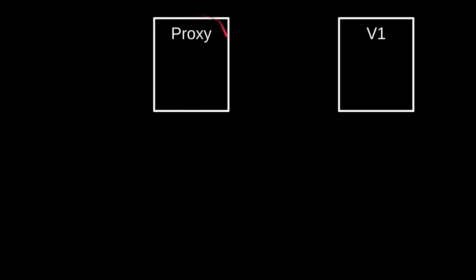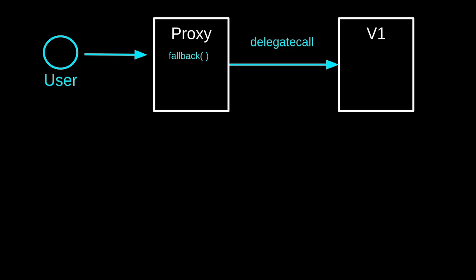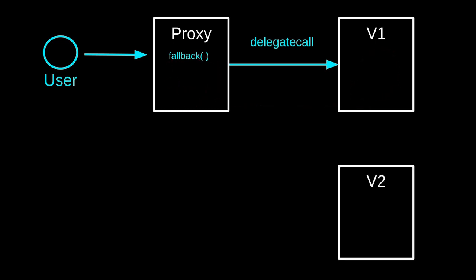Here I have what's called a proxy contract. This is a contract that the users will call. And on the right, we have a contract called implementation — these are the contracts that can be upgraded. A user sends a transaction to the proxy contract. The proxy contract executes the fallback function and it delegates call to the implementation contract.